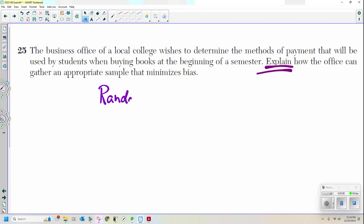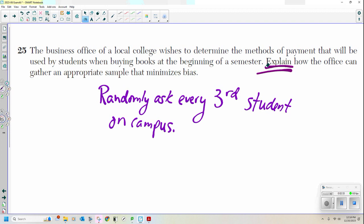I'm going to say, randomly ask every third or fourth or whatever, randomly ask every third student in the uni or on campus. You want to say in the bookstore or whatever, but you just randomly ask every third student. Don't just ask the football team. Don't just ask the people in the engineering department. Just randomly ask every third student because there is no bias whatsoever when it is completely random.